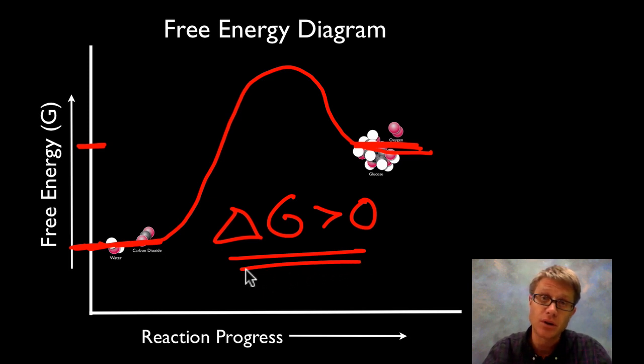In a plant, where does this energy come from? This energy comes from light. Light is providing the energy to actually boost it to a higher free energy.